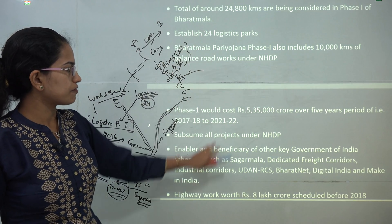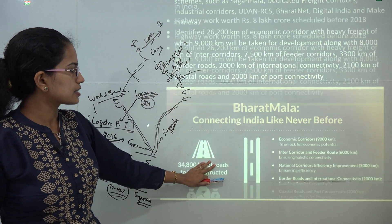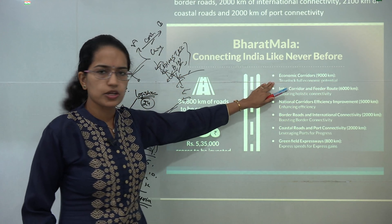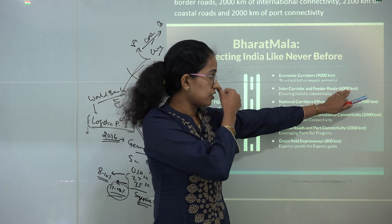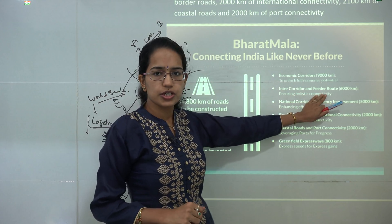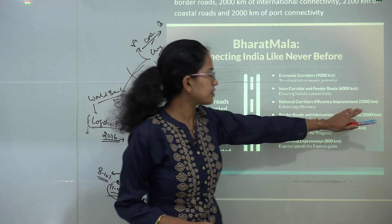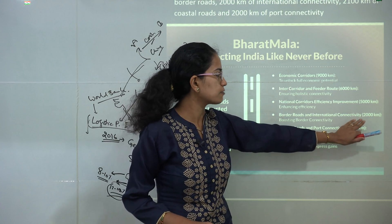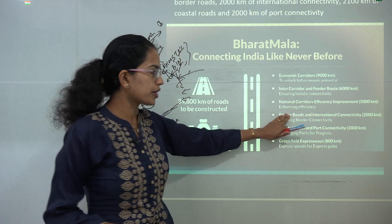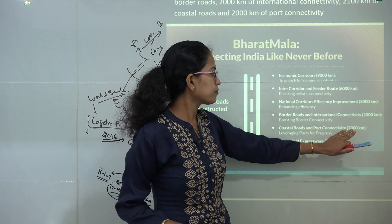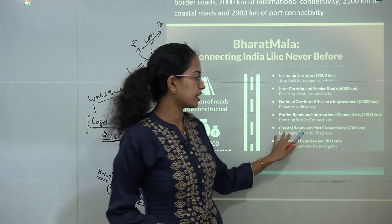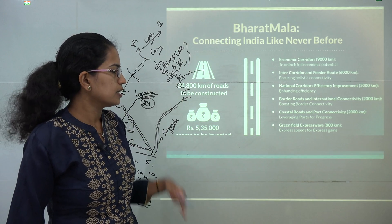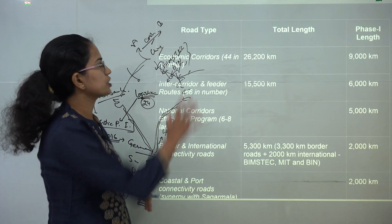Under this scheme you have nearly 9,000 kilometers of economic corridor, 6,000 kilometers of inter-corridor and feeder corridor routes in phase one, 5,000 kilometers of national corridor efficiency improvement, around 2,000 kilometers of border roads and international connectivity, and port connectivity and coastal roads.